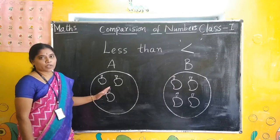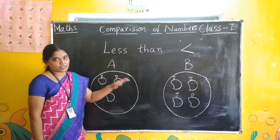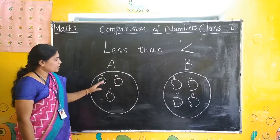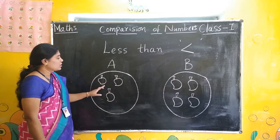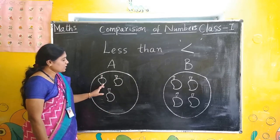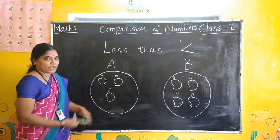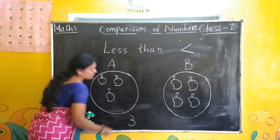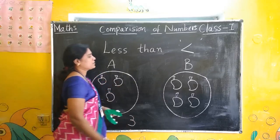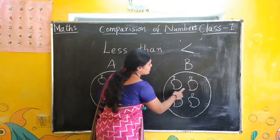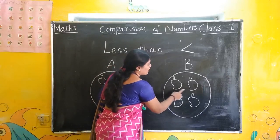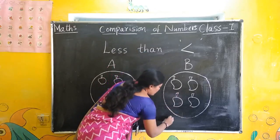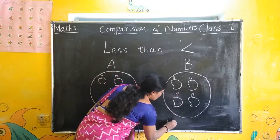Now look at these pictures. We will count and write the number first. Count these mangoes here: 1, 2, 3. Here 3 mangoes are there. Next, here how many mangoes? 1, 2, 3, 4. 4 mangoes.